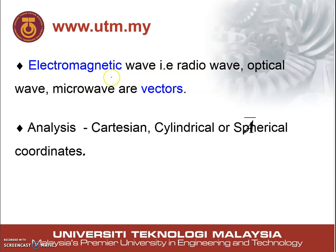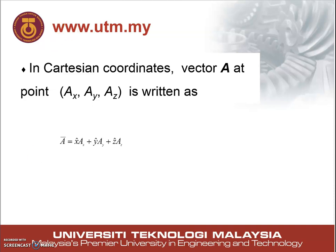Electromagnetic waves such as radio waves, optical waves, and microwaves are all vectors because they have different directions. So vectors can be analyzed in three forms, which are Cartesian, cylindrical, and spherical coordinates. In Cartesian coordinates, the vector is represented in x, y, and z directions.